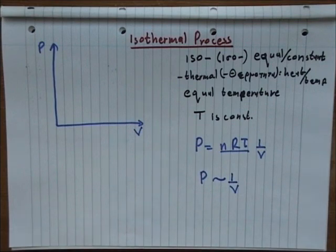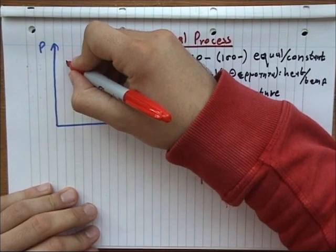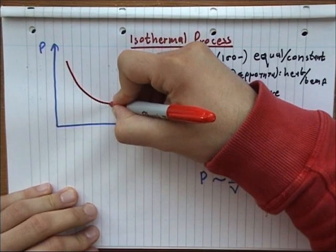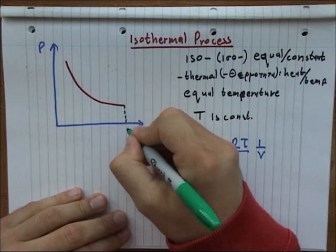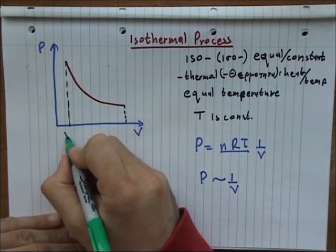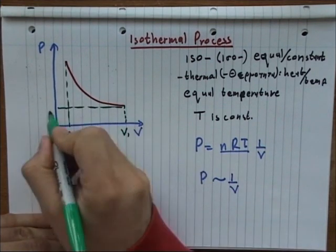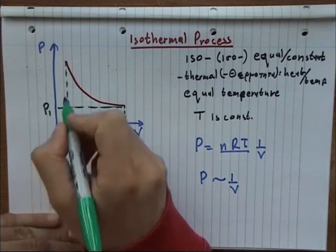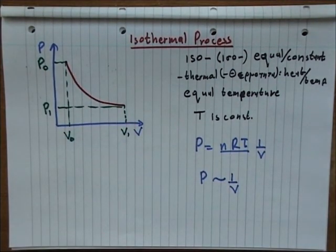The PV diagram of this process is something like this, a hyperbola, which has the initial and final volumes V0 and V1, and pressures P0 and P1.